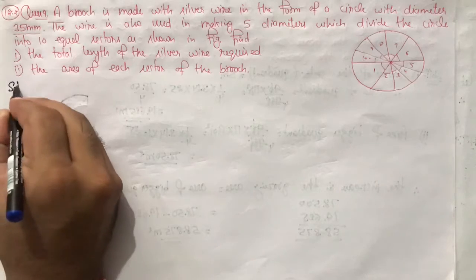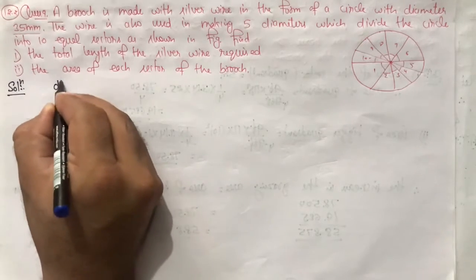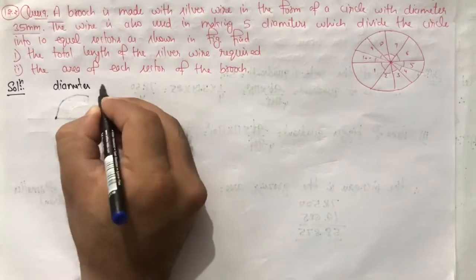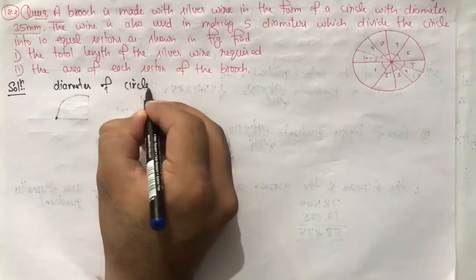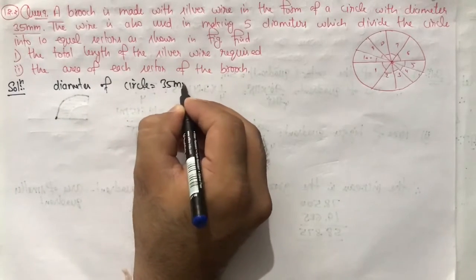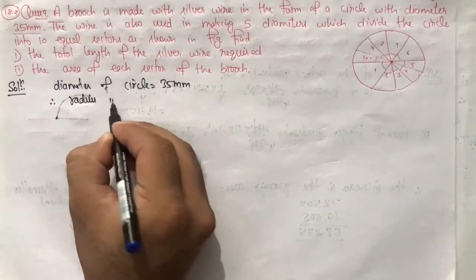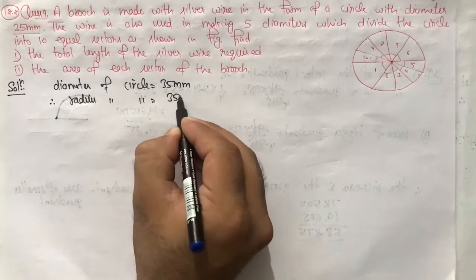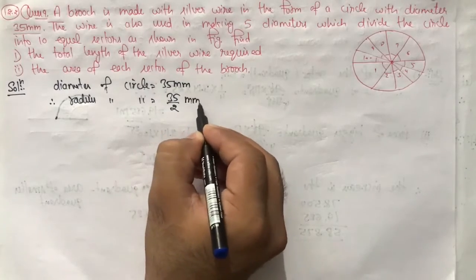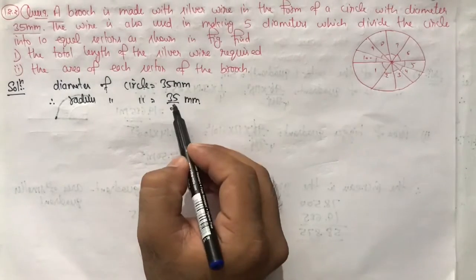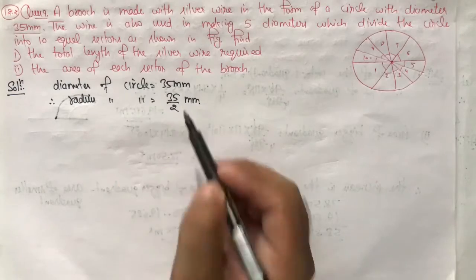Given is the diameter of the circle, 35 mm. Therefore, radius of the circle will be equal to 35 upon 2 mm. D divided by 2, which is your radius.